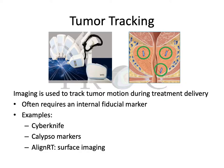Another option for managing intrafraction motion is tumor tracking, which uses imaging to track tumor motion during treatment delivery. This often requires placement of an internal fiducial marker. Examples include CyberKnife — a robotic arm tracking a marker within a tumor and treating the entire time the tumor is moving — as well as Calypso markers placed inside the prostate to tell the machine where the prostate is at all points during treatment delivery. AlignRT is another system that uses surface imaging to do the same thing.